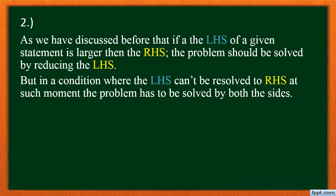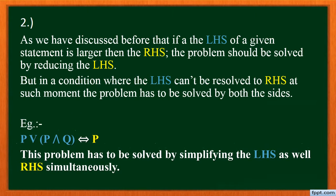But in a condition where the left-hand side cannot be resolved to the right-hand side, and neither can the right-hand side be resolved to the left-hand side, then at such a moment the problem has to be solved by working on both sides simultaneously. We will take an example: P or P and Q, which is equivalent to P. This problem will be solved using this approach.